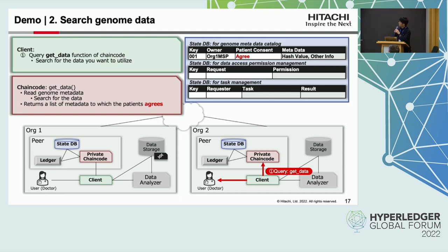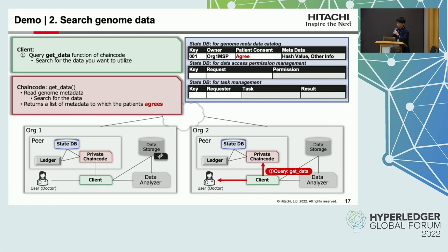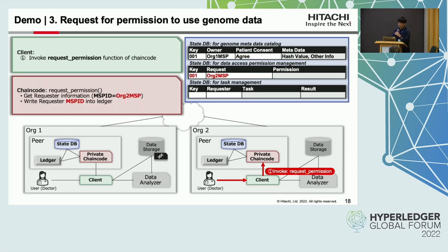Next, the Organization 2 doctor searches the genome metadata written in the ledger. For the search, the get data function of the chain code is queried. This function returns a list of patient-consented metadata. If the Organization 2 doctor finds data that she or he wants to utilize, they invoke the request permission function of the chain code. The function writes the requestor's MSP ID to the ledger. MSP ID stands for Membership Service Provider ID and uniquely identifies an organization and its users.